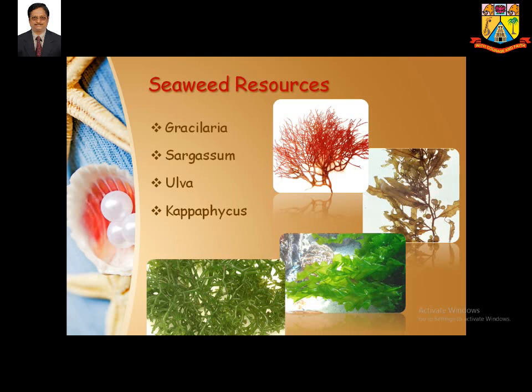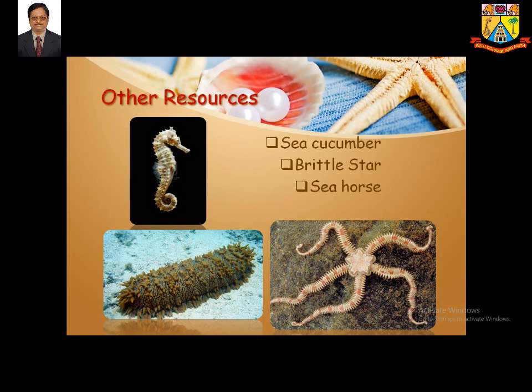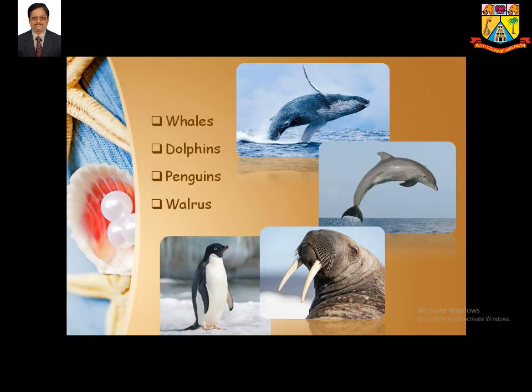There are also interesting resources like sea horses, sea cucumbers, and brittle stars. Sea cucumber is famous in China, where it is celebrated during the New Year as it is rich in protein. However, in India, sea cucumber must not be exploited as it is protected under the Wildlife Protection Act of 1972. Other marine mammals include whales and dolphins — whale hunting is now prohibited, and dolphin shows are practiced in Singapore and Malaysia.